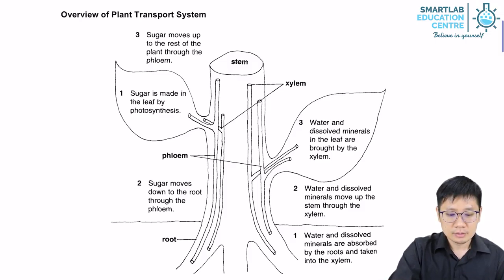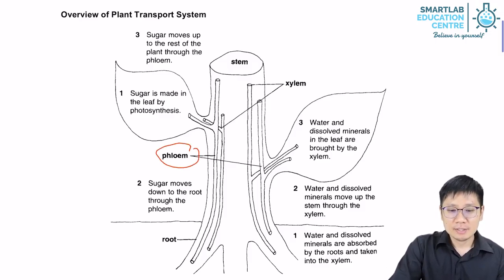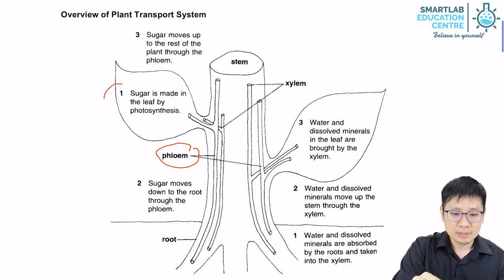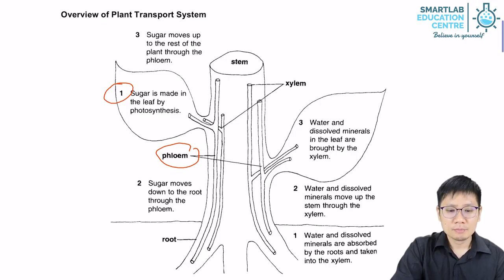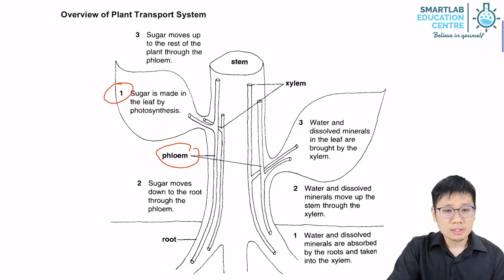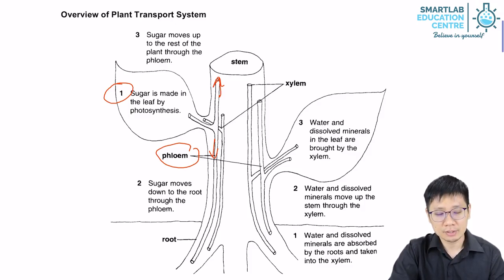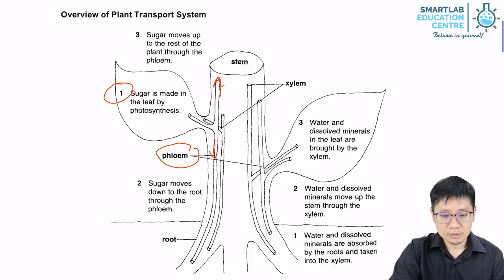The phloem transports food. The food is made in the leaf through photosynthesis, producing sugars. The sugar is loaded into the phloem and moves within it. The phloem can move things both up and down the plant, in both directions, depending on where the food is needed. Most of the food manufactured will be stored within the plant, usually in the roots or the stem.